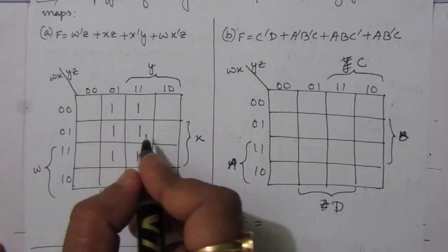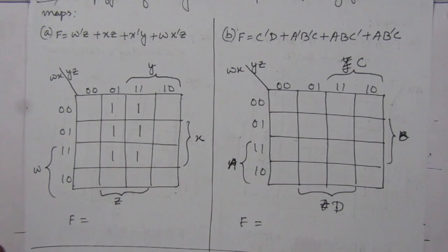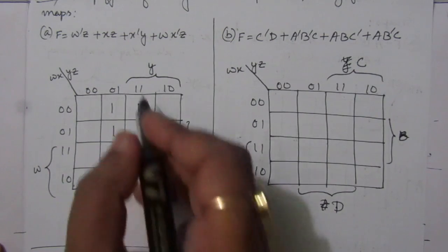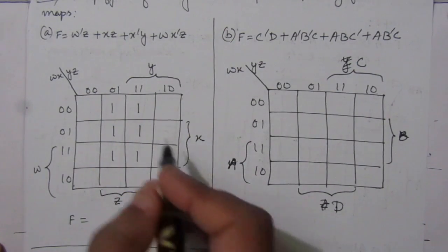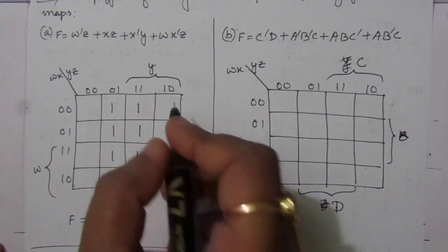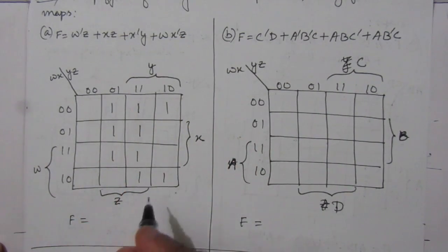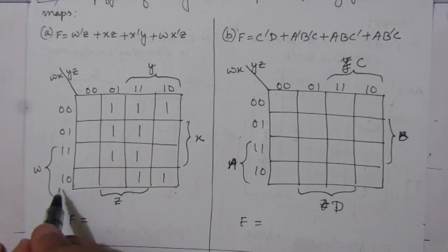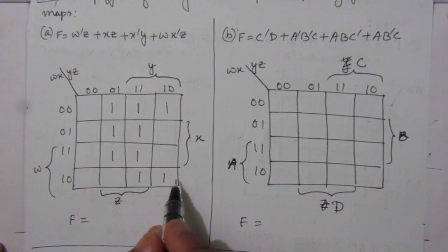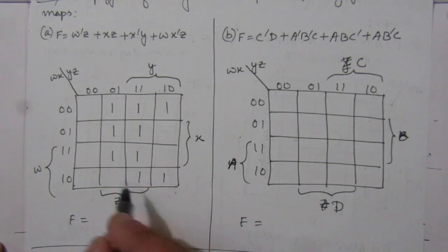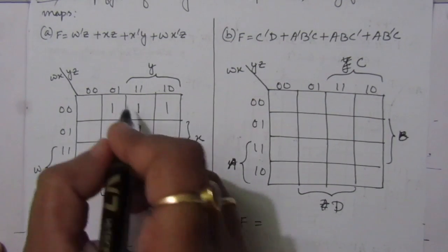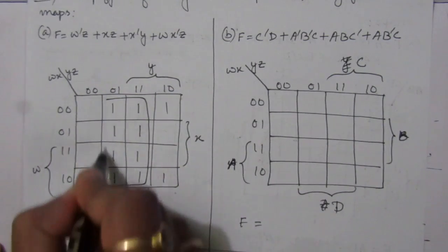Then we have X-bar Y. X-bar covers the first row and the fourth row, and Y covers the third and fourth columns, so we put one there. The last term is WX-bar Z: W X-bar is the fourth row, and Z is the second and third columns, so we put one there. We can combine these groups — this will be one term and this will be another term.